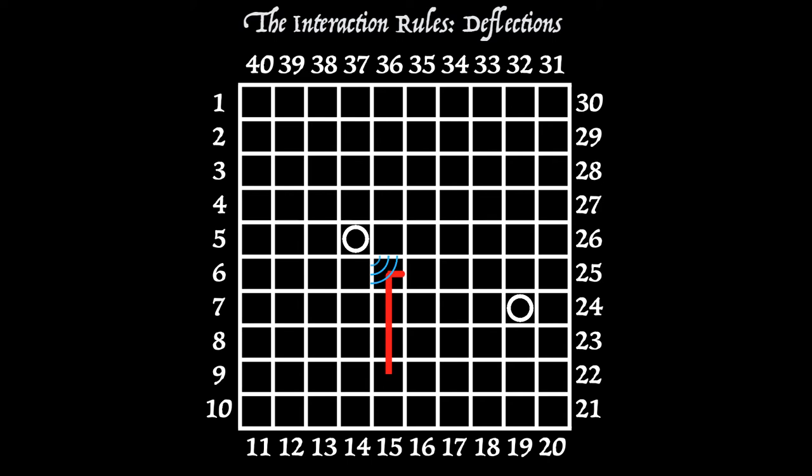And of course, these deflections can happen several times as the beam enters. There's one deflection, another deflection in at 15 out at 33. So a beam coming in at 15 and exiting at 36 hasn't necessarily come straight across the board, as you can see in that example.